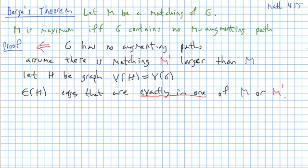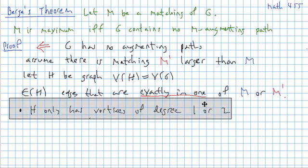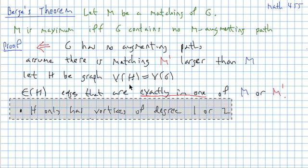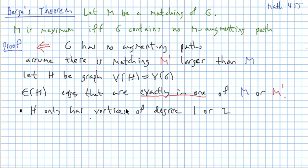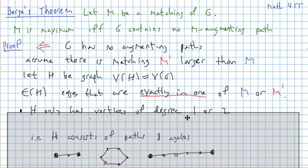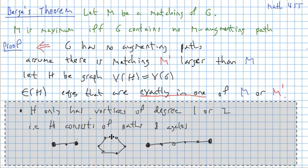So let's make some observations about this graph. The first one is that since it's built from the matchings M and M prime, H only has vertices of degree 1 or 2. So therefore, this graph consists of paths and cycles.